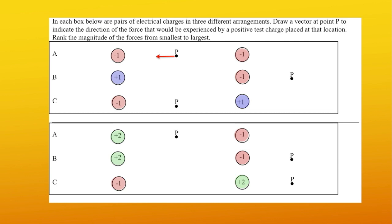I also have negative one to the right, so I'm going to feel a force to the right as well. For letter B, our positive test charge is all the way to the right. The first force is going to be to the left from our negative one charge. The next force is going to be to the right, but this force arrow is smaller. Why? Because this positive one charge and the test charge are very far away — the farther away, the smaller the force felt.